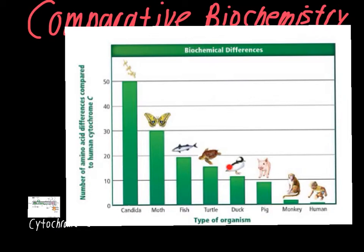As we move away to things further related from people, we see more and more amino acid differences. Pigs are still relatively closely related — they're mammals and vertebrates. Ducks are still vertebrates but not mammals, so now we get bigger differences. Turtles are vertebrate reptiles. Fish are even further away. Then we get to something like moths — not even a vertebrate, in an entirely different phylum than people — and the reason for those differences is we have a dramatically different number of amino acids in the coding for cytochrome C.